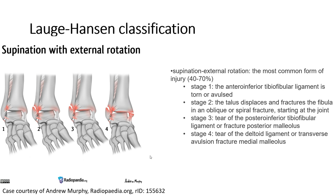Supination with external rotation is divided into 4 stages. Stage 1: the anterior inferior tibio-fibular ligament is torn. Stage 2: the talus displaces and causes an oblique or spiral fibular fracture starting at the joint level. Stage 3: tear of the posterior inferior tibio-fibular ligament or fracture of the posterior malleolus. Stage 4: tear of the deltoid ligament or transverse avulsion fracture of the medial malleolus.